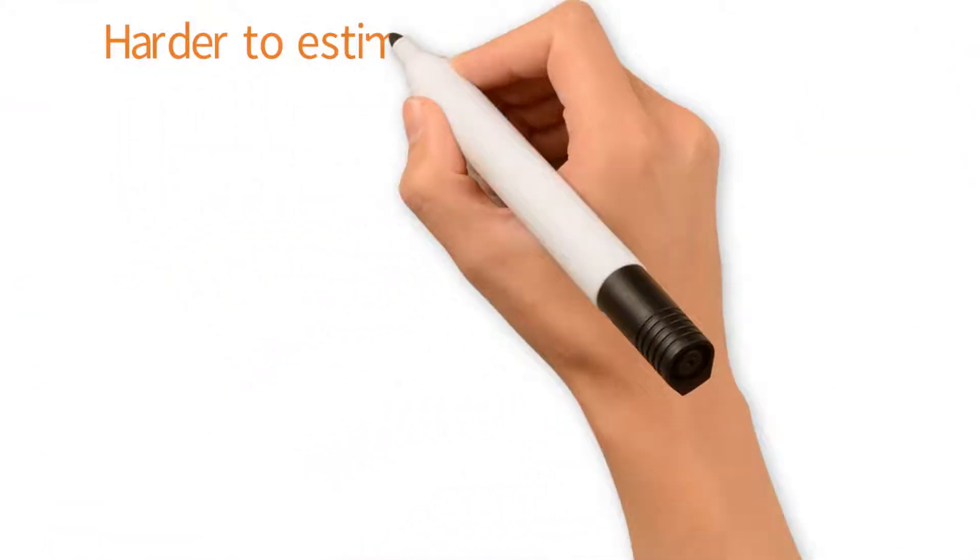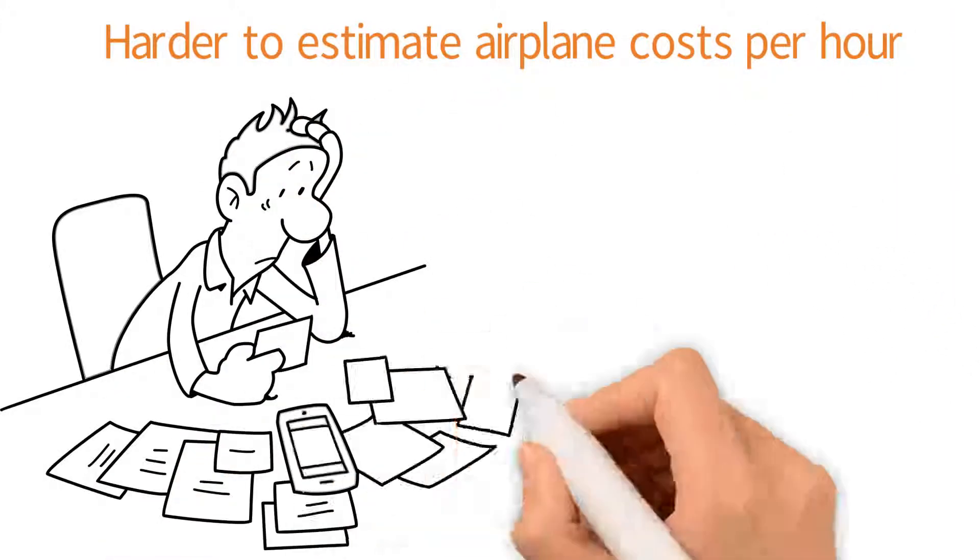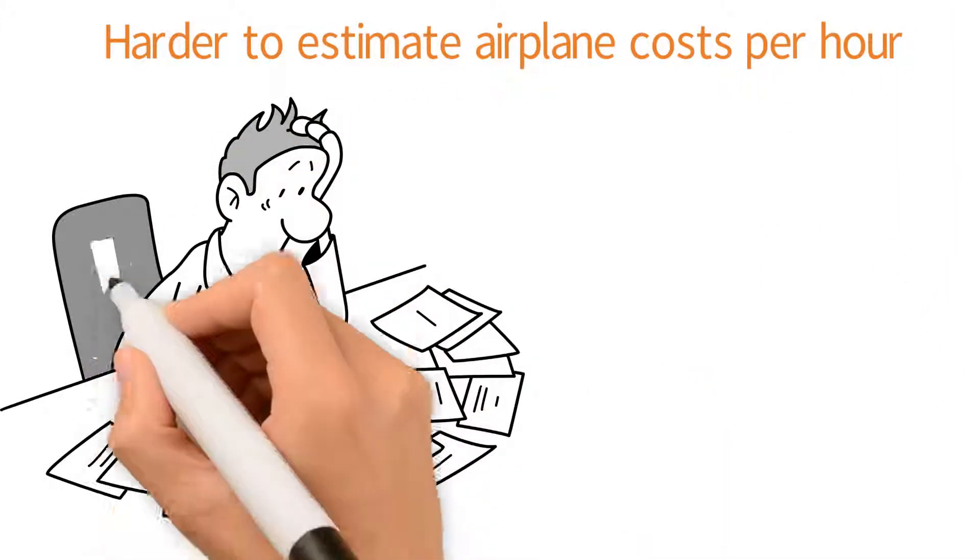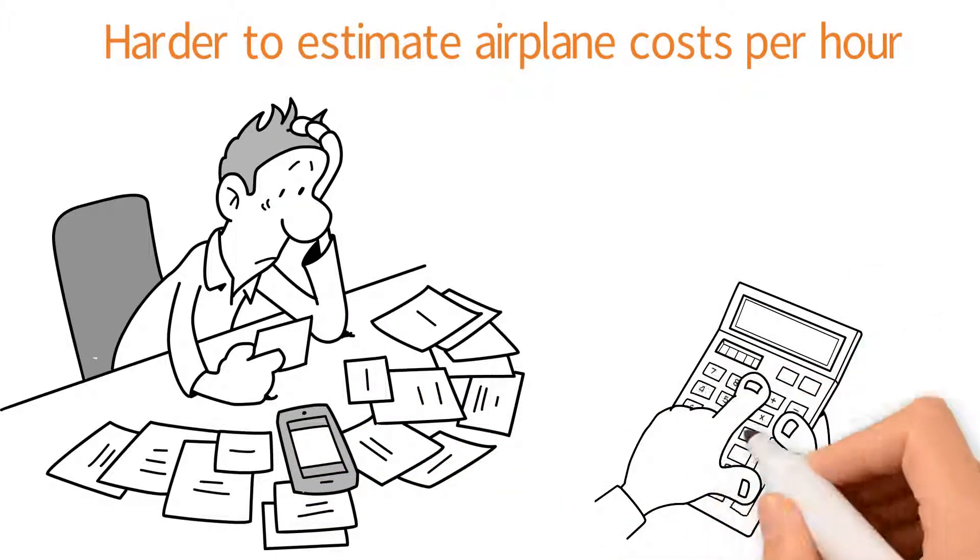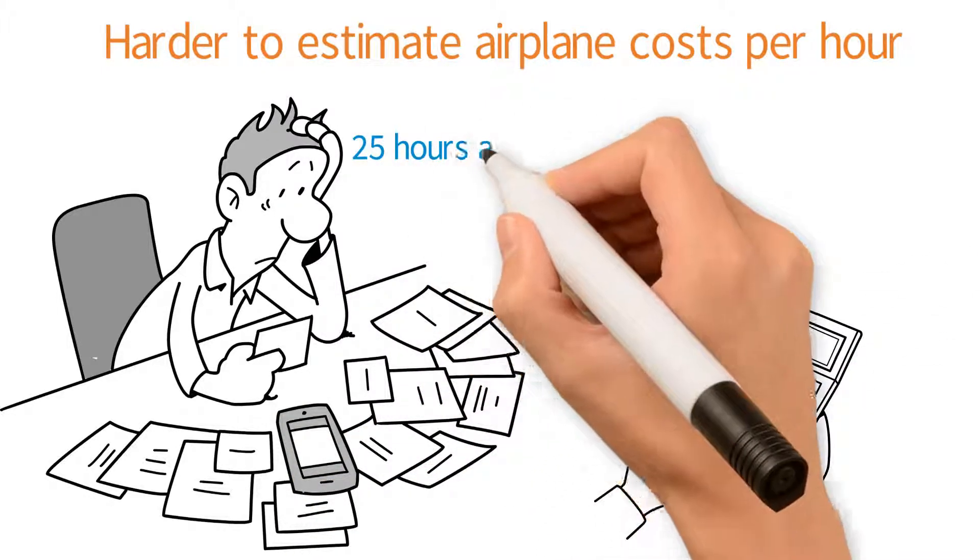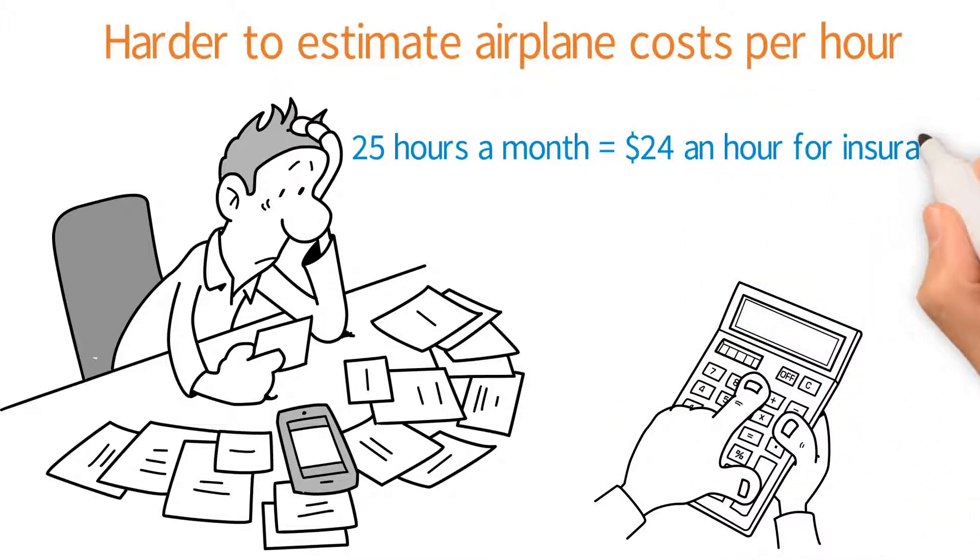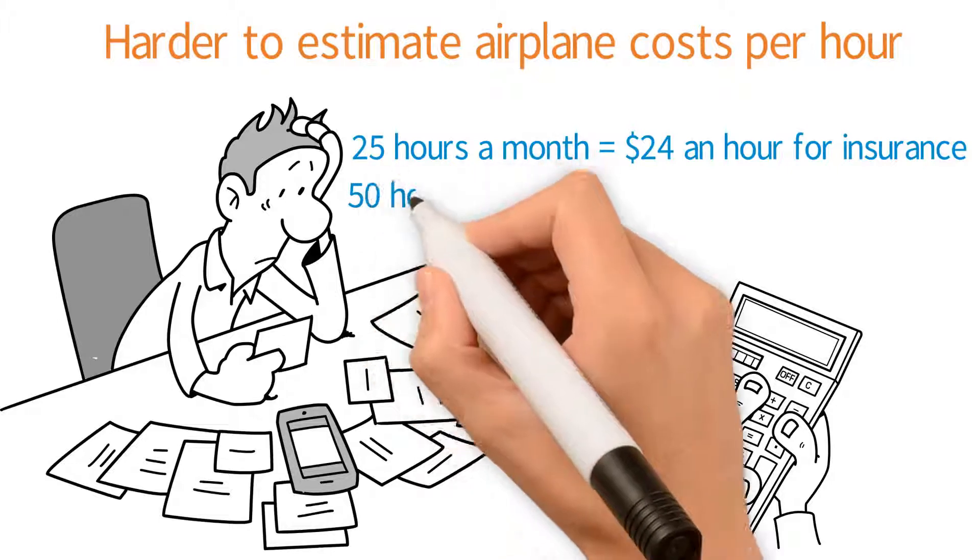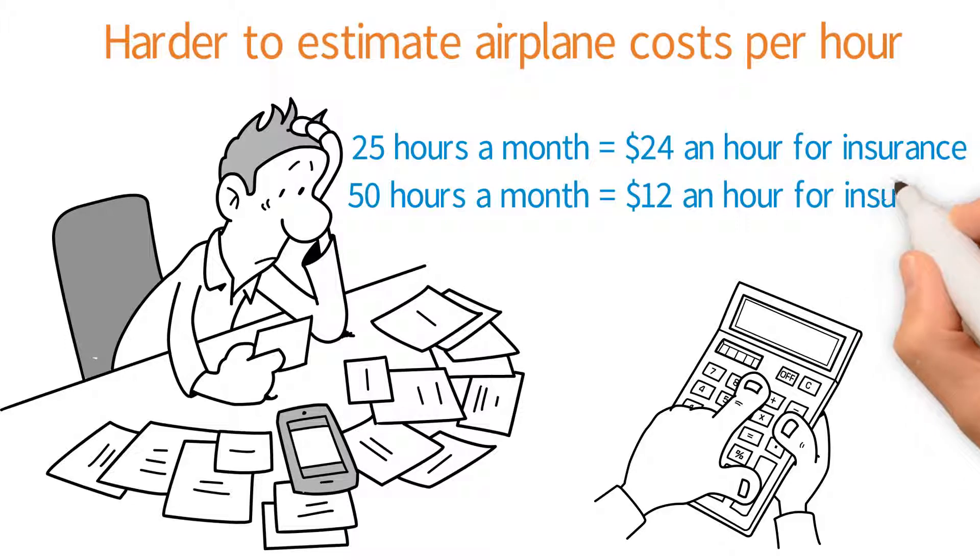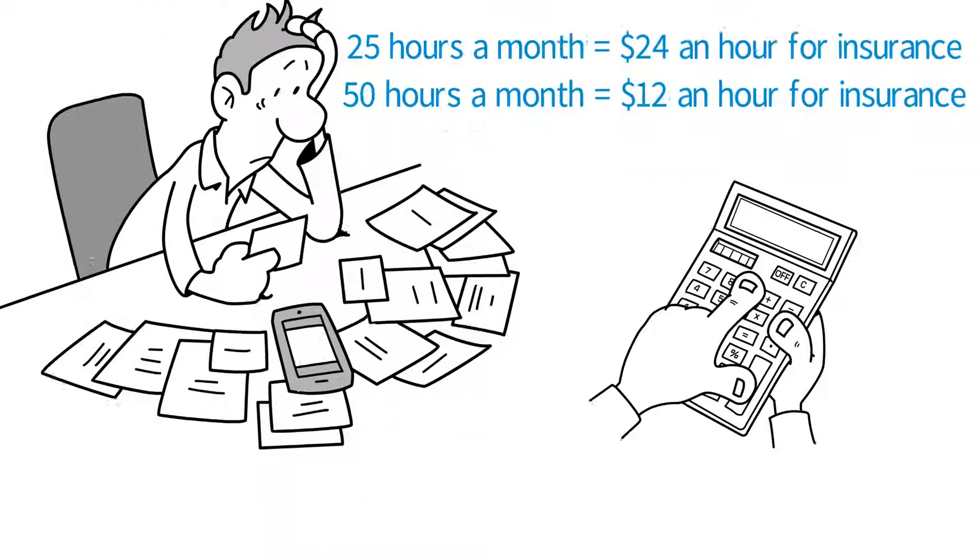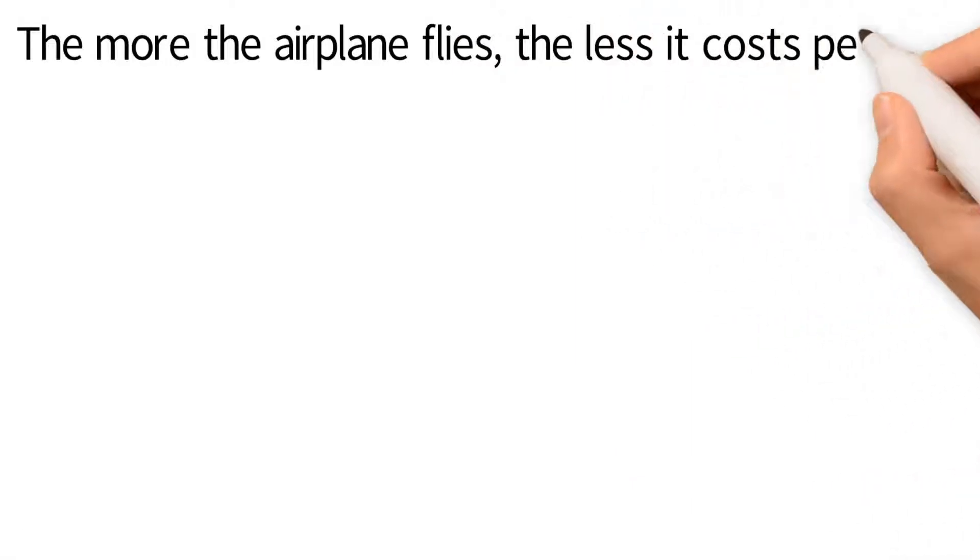For fixed costs, it's harder to estimate how much the airplane costs per hour because the school needs to estimate how many hours the airplane will fly each month. For example, if the insurance costs $600 a month and the school's aircraft flies 25 hours a month, it will cost the school $24 an hour for insurance. But if the school thinks the aircraft will fly 50 hours a month, it will cost the school only $12 an hour for insurance. So the more the airplane flies, the less it costs per hour.